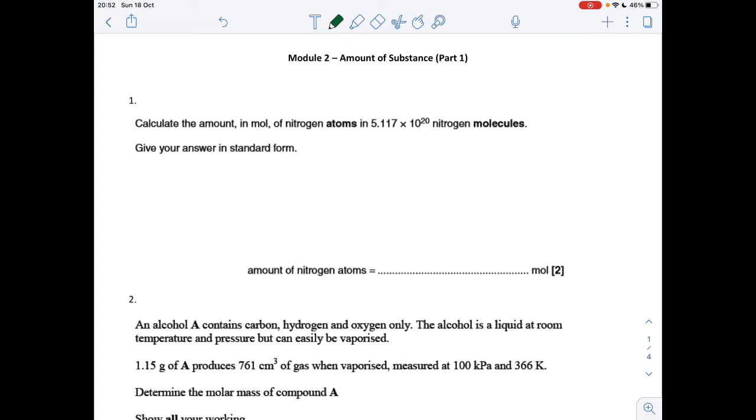First question: calculate how many moles of nitrogen atoms we've got in 5.117 times 10 to the 20 nitrogen molecules. That's obviously N2, so the number of nitrogen atoms is going to be 2 times that 5.117 times 10 to the 20, which equals 1.0234 times 10 to the 21 atoms.